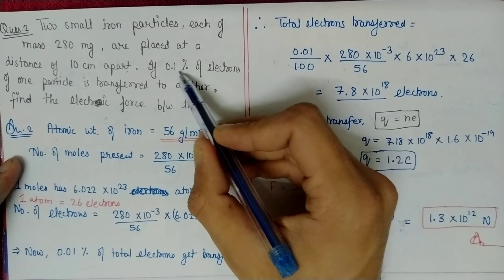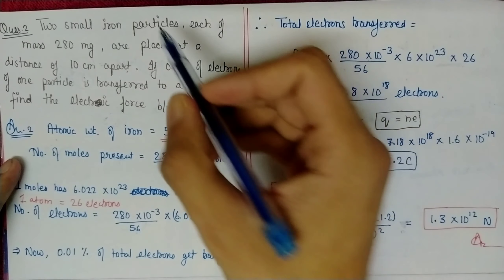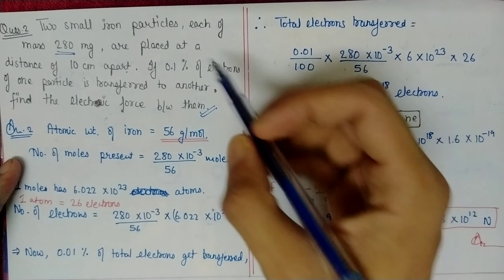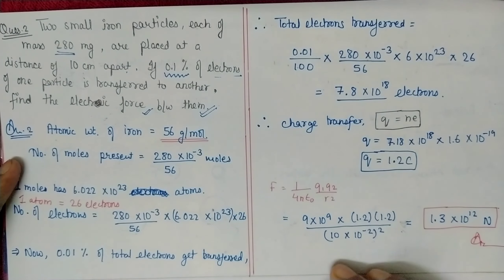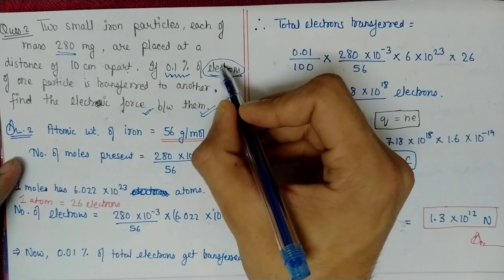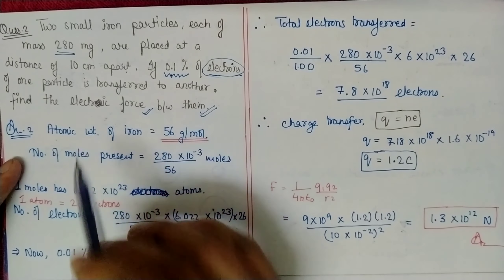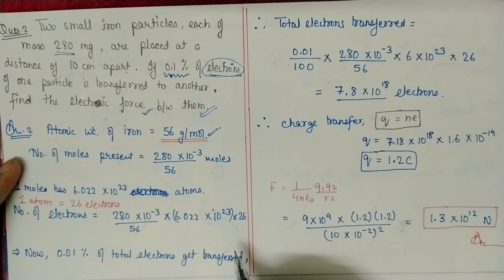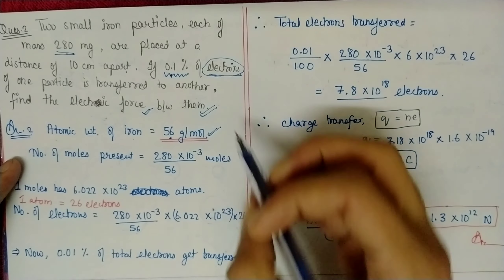Question 2: Two iron particles of mass 280 mg are placed 10 cm apart. If 0.1% of electrons of one particle are transferred to the other, find the electric force between them. First, we need to find the total number of electrons. The molar mass of iron is 56 g, and we are given 280 mg, so number of moles = (280 × 10⁻³) / 56.